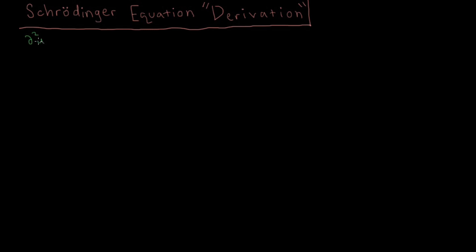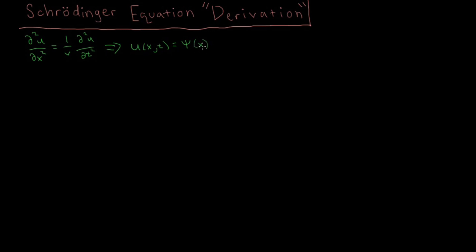In the last couple of videos we talked about the classical wave equation, where we had some wave amplitude u, which is a function of space and time, and it obeyed the classical wave equation — a second order partial differential equation. To get the solutions of this, we can get an object which generally looks like some spatial function psi, the spatial part of the wave, equal to psi of x times some function of time, cosine omega t.